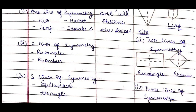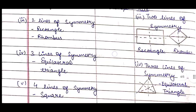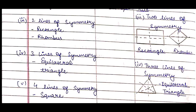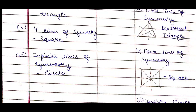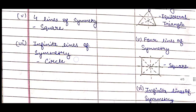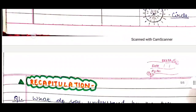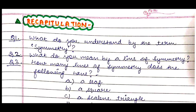Two lines of symmetry are present in a rectangle and rhombus. Three lines of symmetry are present in an equilateral triangle. Four lines of symmetry are present in a square. I have mentioned up to four lines since children of class 5 and 6 are quite young, but you can go up to seven, eight, or ten if you want. Then tell them a circle has infinite lines of symmetry — they can be drawn from anywhere.